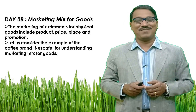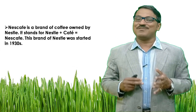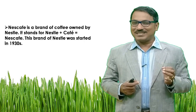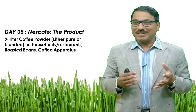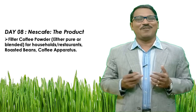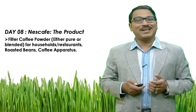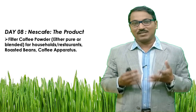Let us consider the example of the coffee brand Nescafe for understanding marketing mix for goods. Nescafe is a brand of coffee owned by Nestle. It started during the 1930s and it stands for Nestle plus cafe equals Nescafe. The first P of the marketing mix in case of Nescafe is the product. Product here is filter coffee powder, either pure or blended, for households and restaurants. They are also sellers of roasted beans and coffee apparatus.